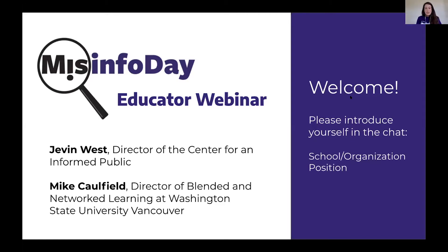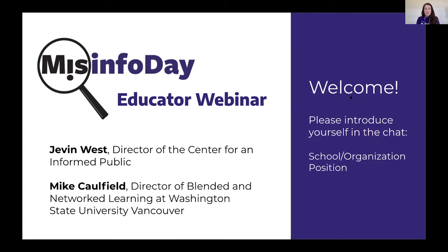I'm Liz Krauss, the MisInfo Day coordinator, and I will be moderating today. We are talking with Jevin West and Mike Caulfield. Jevin is an associate professor in the Information School, director of the Center for an Informed Public, and he created the course Calling Bullshit at UW with his colleague Carl Bergstrom, which teaches students how to spot misinformation with a focus on data reasoning. Mike is the director of Blended and Network Learning at Washington State University Vancouver, and he developed the SIFT fact-checking method and created courses and materials that teach people how to fact-check online information using that method.